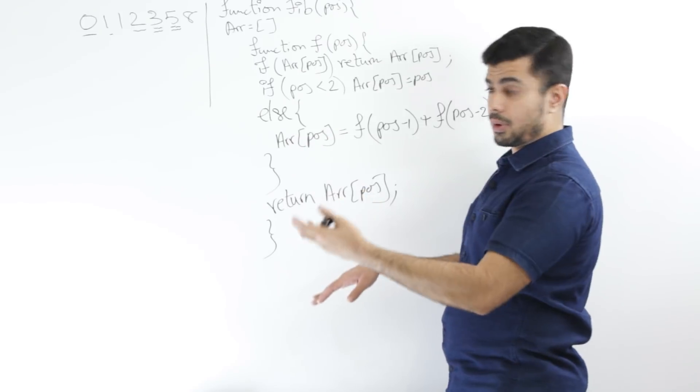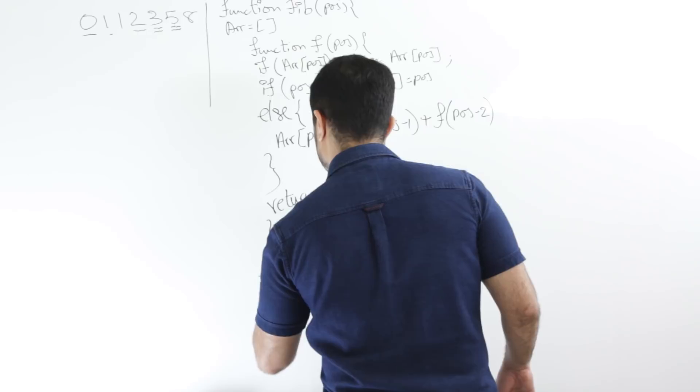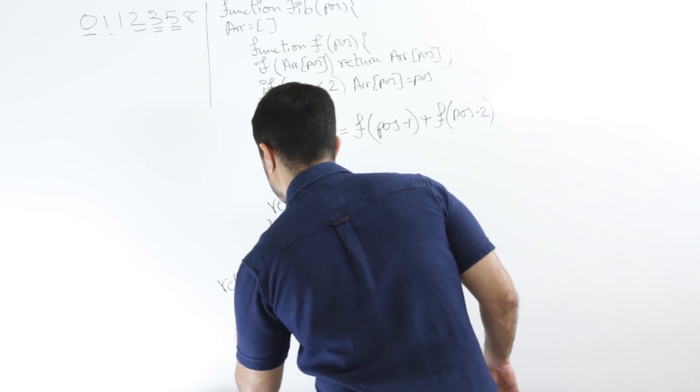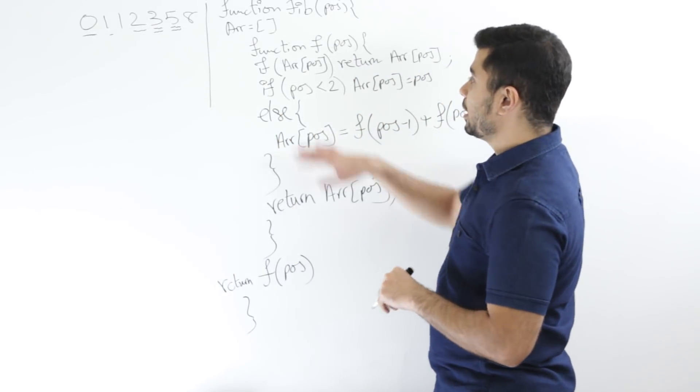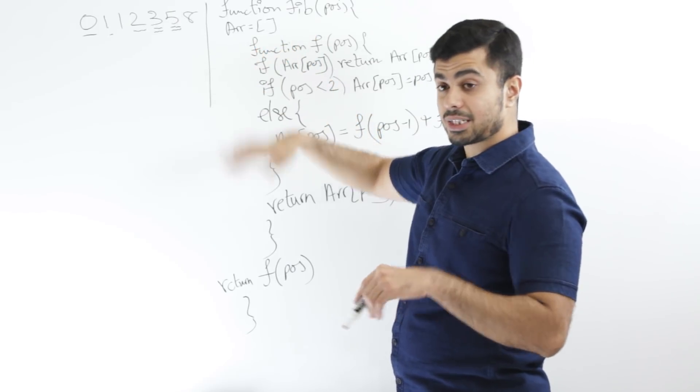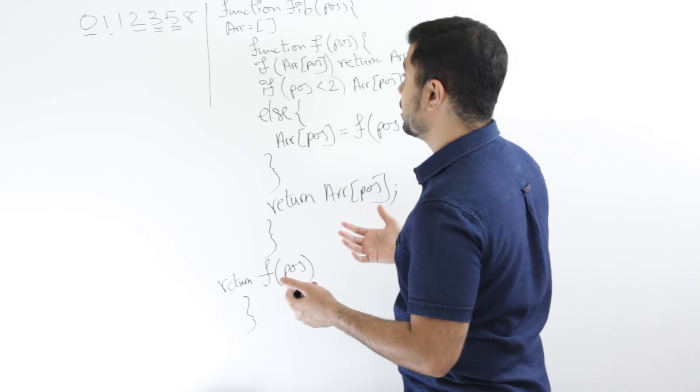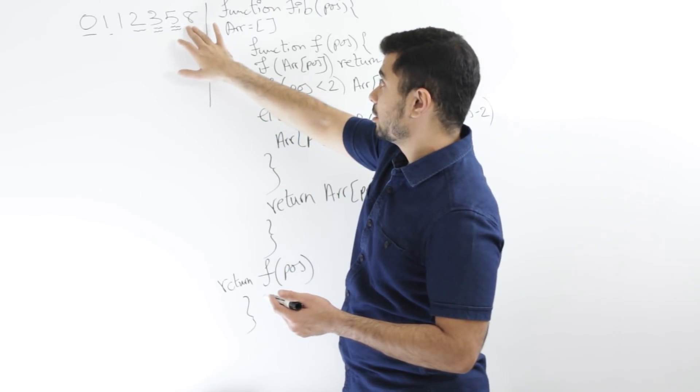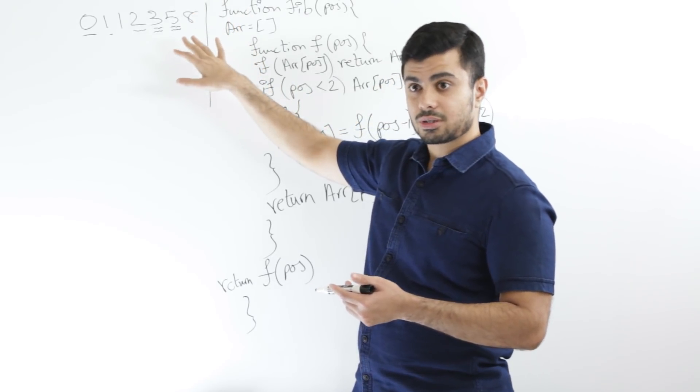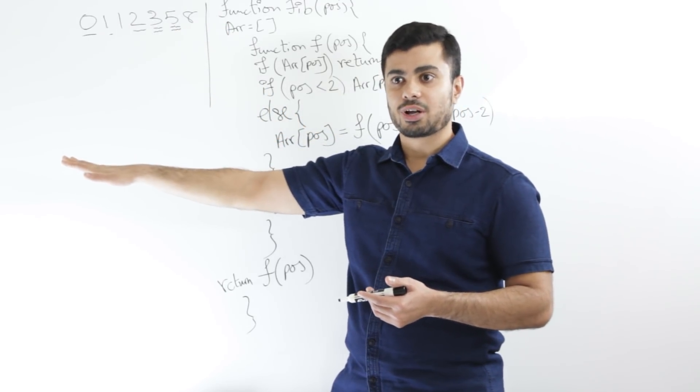Now I need to call this somehow. So I'll just say F of position return inside of my Fib function. And that's it. So you'll see that at the end, I will have this array full. So my space complexity is linear. And my time complexity in this case is that I am calculating the positions or the numbers at positions for each one of these elements. So that's going to be linear as well.